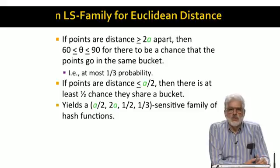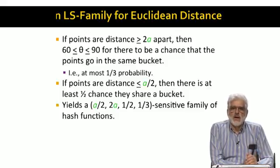We can combine these two observations to say that for any value of a, we can have an a over 2, 2a, a half, a third sensitive family of hash functions for Euclidean distance in two dimensions.